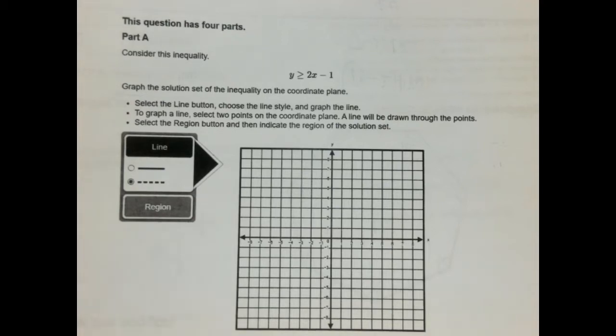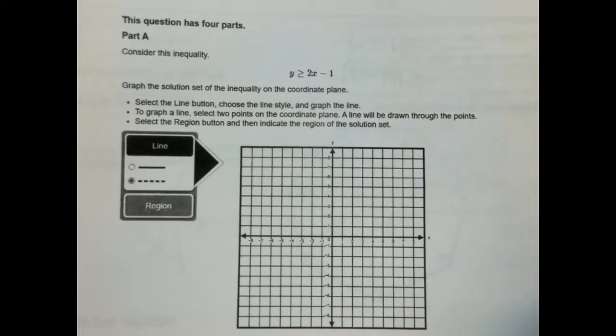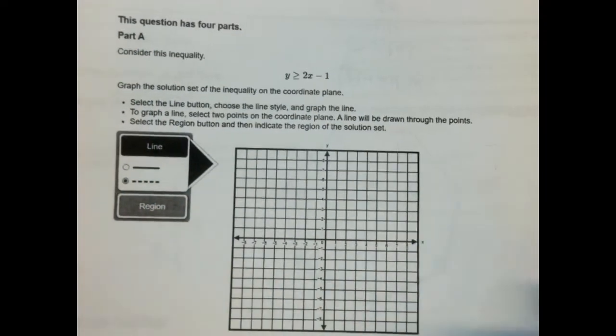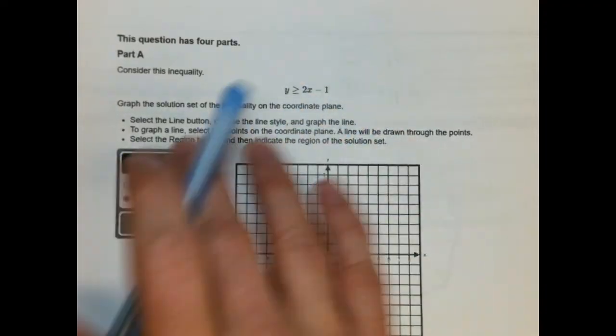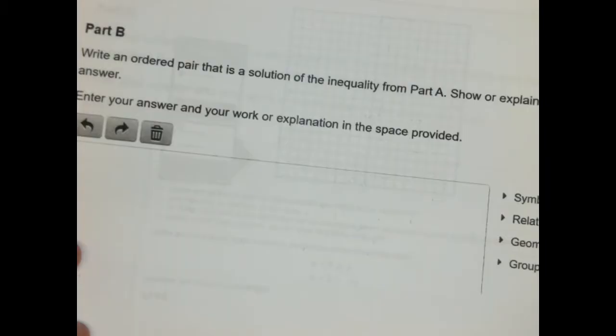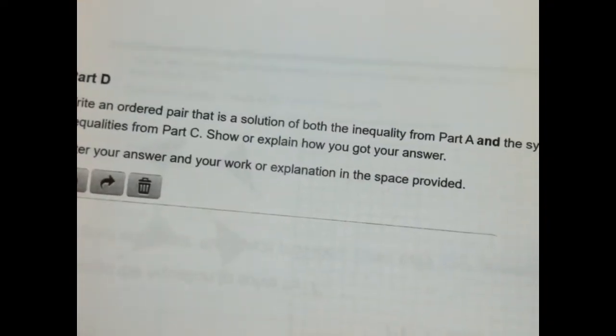All right, here we go. I've got a little bit of time, I think I can do this multi-part problem. It has four parts. The first part is asking us to deal with an inequality. The next part is asking about an ordered pair we got from it. The third part, we've got a system of inequalities. And the fourth part is asking about something out of them.